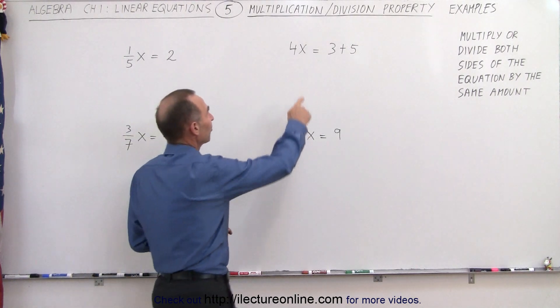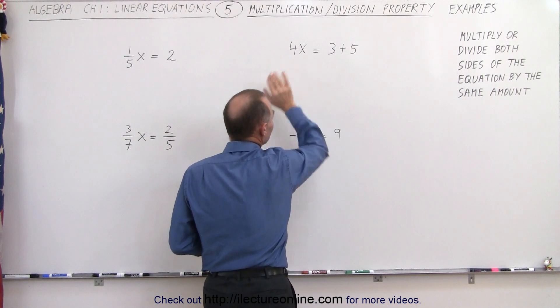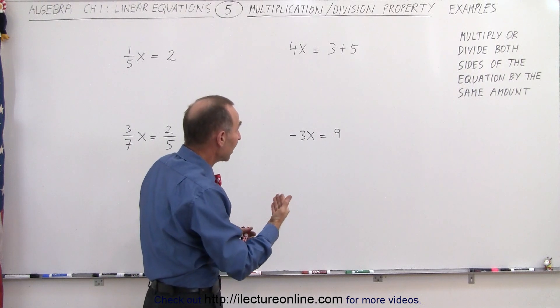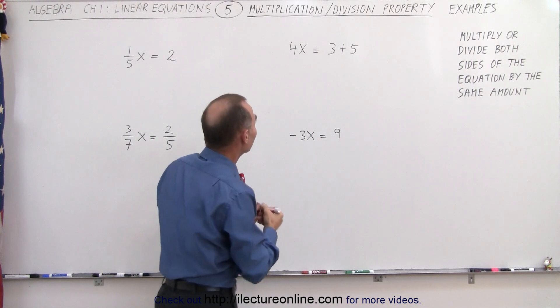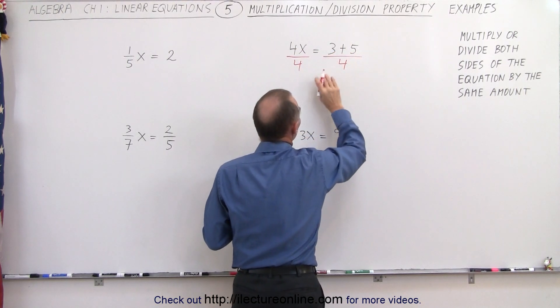Our first example says that 4x equals 3 plus 5. We have 4x on the left side, I want to get rid of the 4, so I'm going to divide the left side by 4. But if I do that, I must also divide the right side by 4. So the left side by 4 and the right side divide by 4.